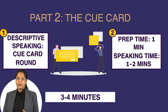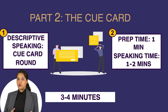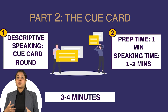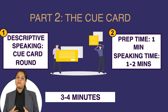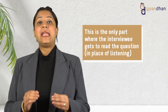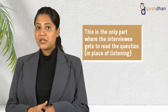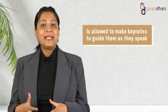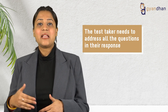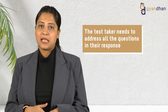Then comes Part 2 — the cue card. In this part, the examiner would give you a cue card with questions written on it. You need to speak on the given topic for 1–2 minutes. A 1-minute preparation time is also given, during which you can make some keynotes, and stationery will be provided before Part 2 begins. This is the only part where the interviewee gets to read the question instead of listening, gets time to prepare for the answer, and is allowed to make keynotes to guide them as they speak. The test taker needs to address all the questions in their response. The cue card round takes around 3–4 minutes.